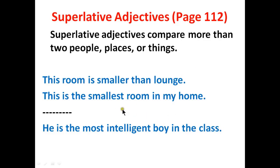If any adjective has more than two or three syllables, use 'more' or 'most' before it. For example, you can say this is the most beautiful flower in the garden. You cannot say 'intelligentEST' — that would be wrong or totally awkward. Better say: he is the most intelligent boy in the class.